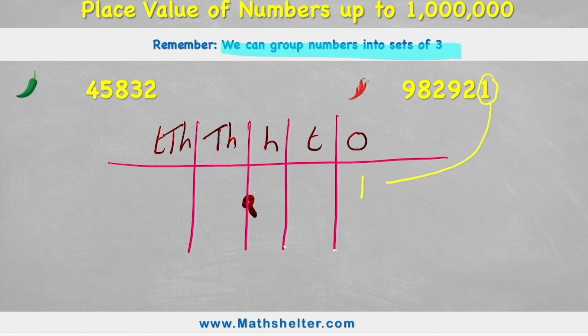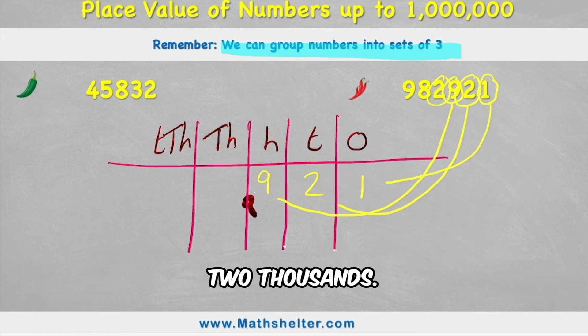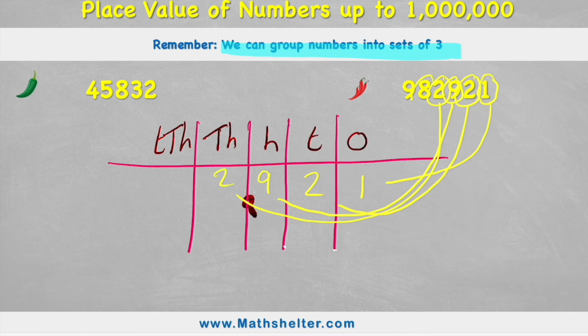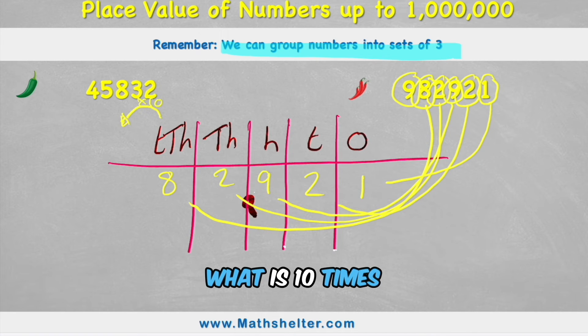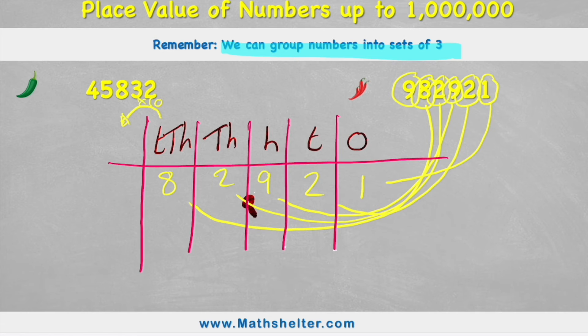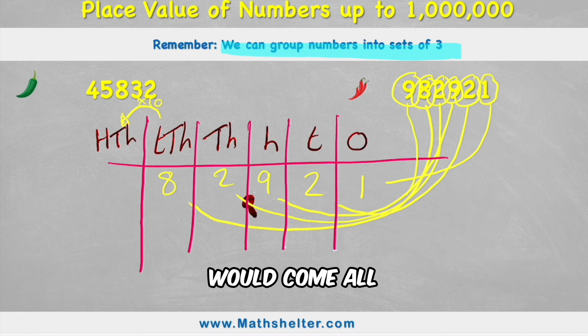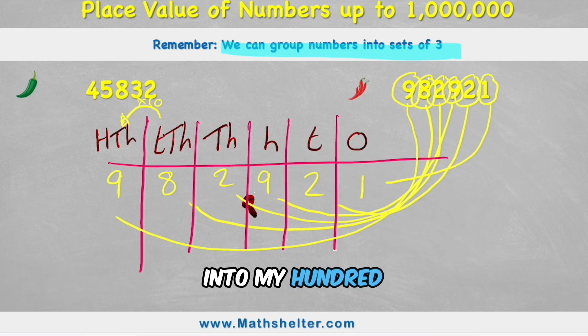So the 1 will go into the ones column. I have 2 tens. I have 9 hundreds, 2 thousands, 8 ten thousands. And now we need another column. So if we had 10,000s here, and we know that the next column is 10 times larger, what is 10 times larger than 10,000? Well, 10 times larger than 10 would be 100, so it'd be 100,000 in this column here. So the 9 would come all the way across into my 100,000 column.